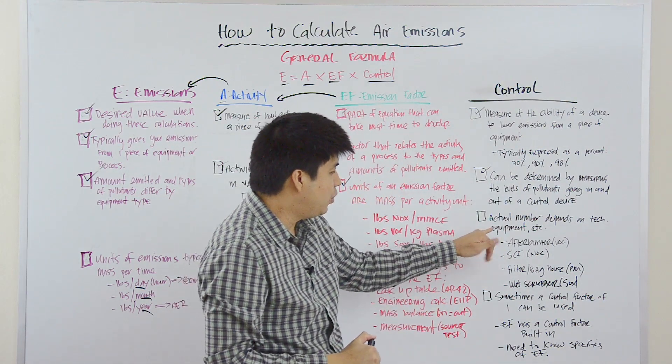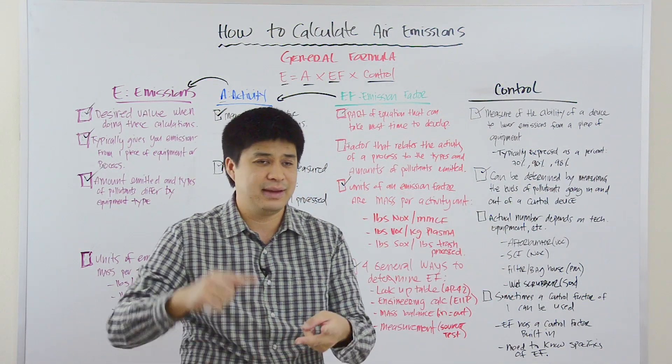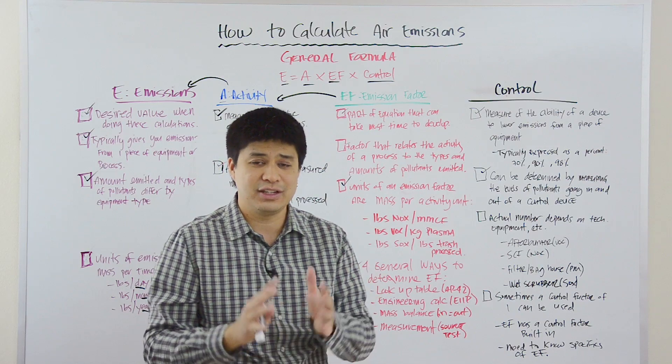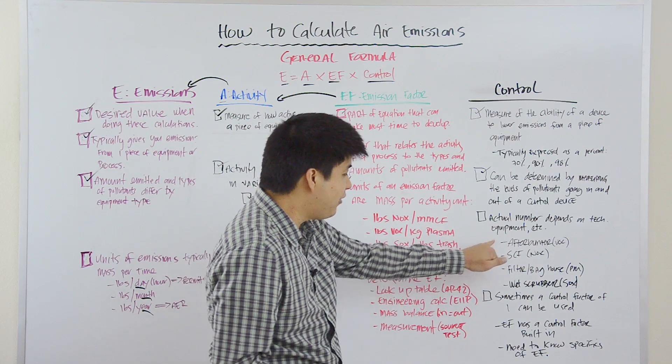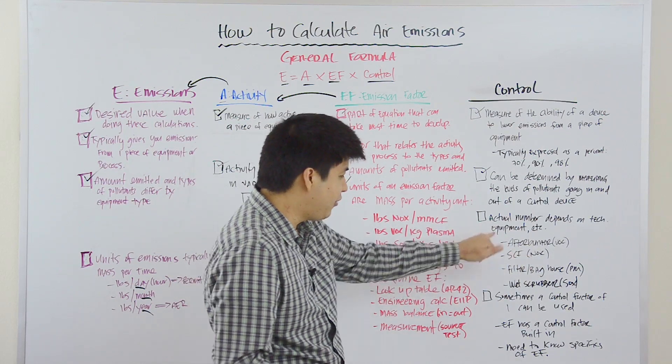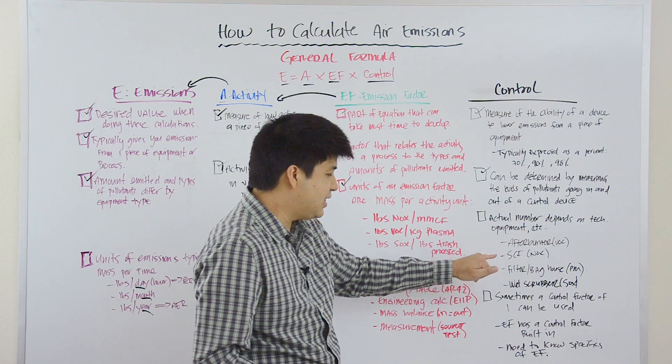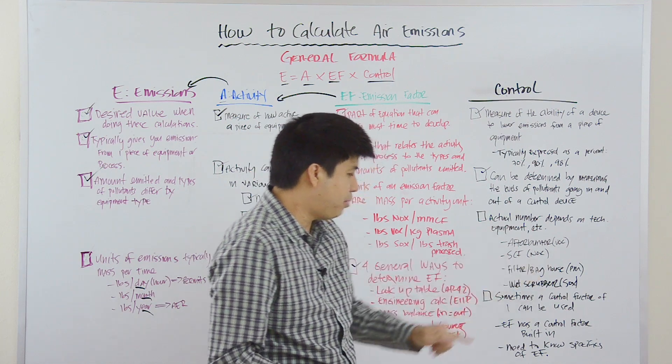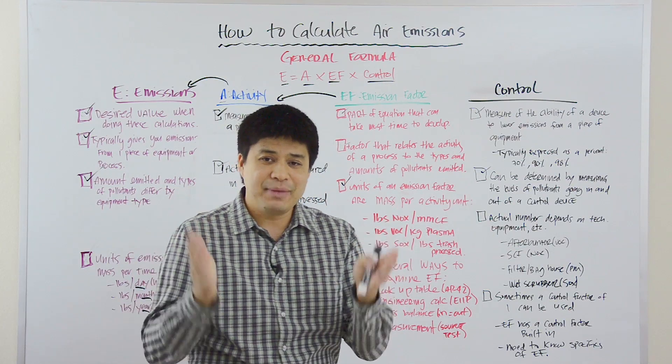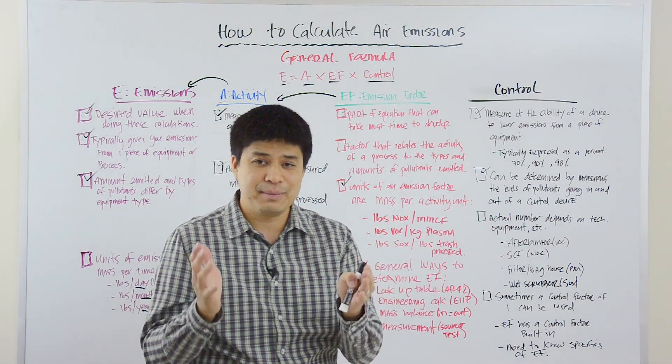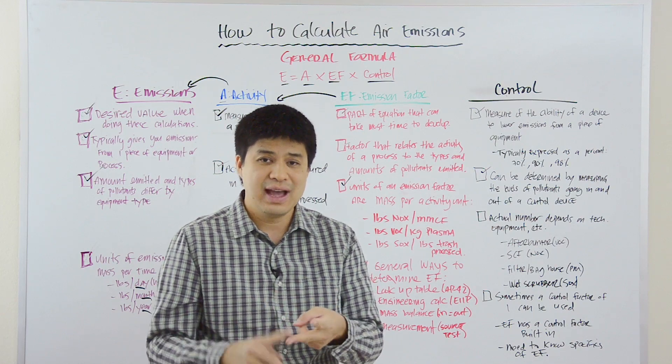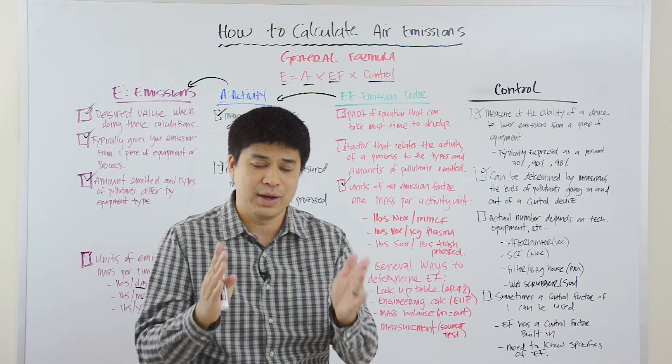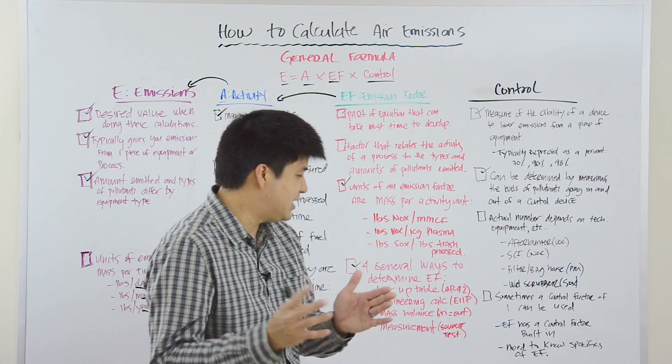Now, the actual number will depend on a number of things. Technology, equipment, meteorological conditions, process. There's a whole number of things that can determine the actual control efficiency. And they differ from technology. And so, an afterburner controlling VOC would have a different control efficiency than an SCR unit for NOx and a bag and filter house for particulate and then a wet scrubber from SOx. And so, the type of control technology that you have employed is important to know, number one. And number two, how effective is that control technology in controlling emissions of that one particular pollutant is the second piece that's important to know.